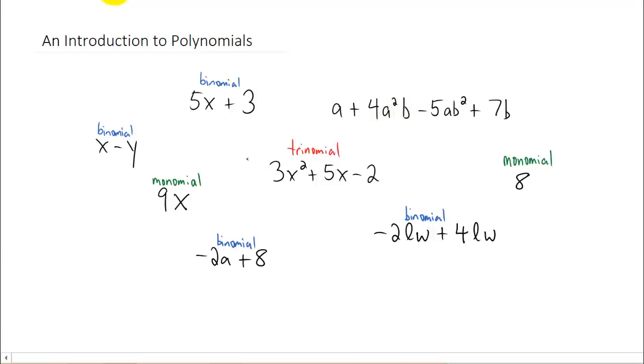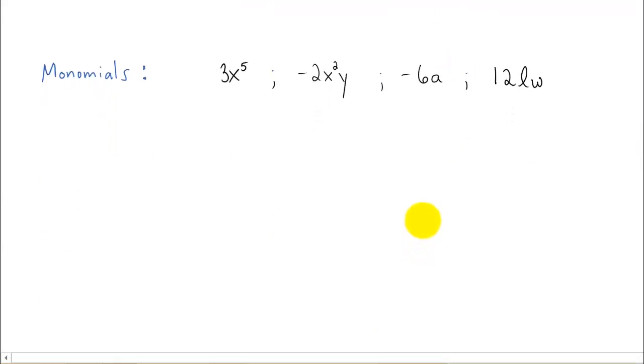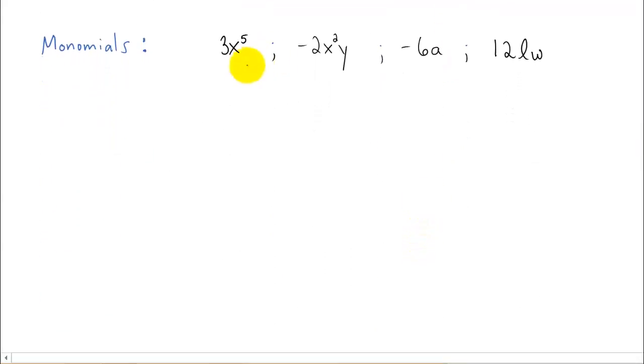Now there's a bit of vocabulary that we want to talk about, so to start going through that vocabulary, I want to begin with monomials. Each one of these is a polynomial that's separate from the others, and each one just has one term, so it's called a monomial.